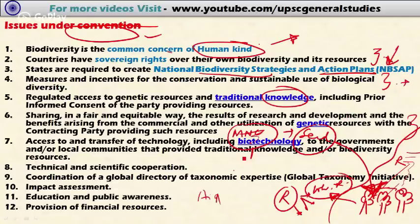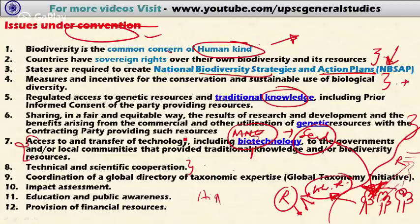If a multinational company produces a high-yielding variety by utilizing genetic resources from a forest, it must provide equal benefit to the local community and to the country whose genetic resources were used. Additionally, access to technology transfer — including biotechnology — must be given to governments and local communities that provide traditional knowledge and biodiversity resources.